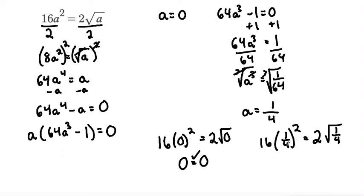So 1/4 squared is 1 squared is 1 and 4 squared is 16. So that would make 16 times 1 over 16 equals the square root of 1/4 is 1 over 2.